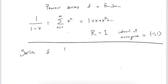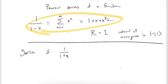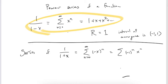For 1/(1+x), we use the formula for 1/(1-x) but plug in negative x to compensate for the plus sign in the denominator. So this gives us the sum of (-x)^n, which we can write as the sum of (-1)^n x^n. This is the series for 1/(1+x).